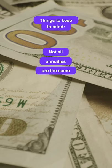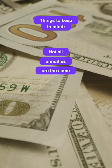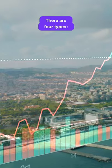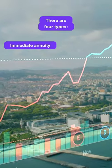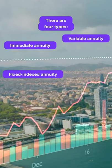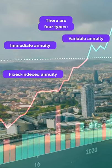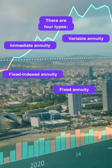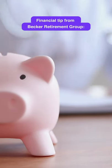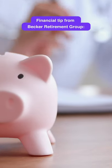But not all annuities are the same. You've got these four different types: the immediate annuity, variable annuity, a fixed indexed annuity, and the fixed annuity. It's really important to know that every situation is truly unique.